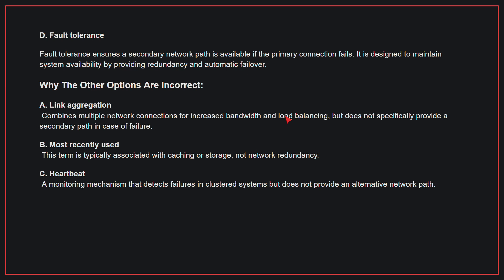Why the other options are incorrect? A, link aggregation: this combines multiple network connections for increased bandwidth and load balancing, but it does not specifically provide a secondary path in case of failure.